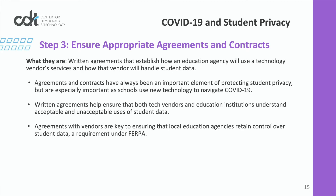The third step is to ensure that the appropriate agreements and contracts are in place with all vendors that are collecting students' PII. These agreements establish how you will use a vendor's services and how that vendor will handle student data. Agreements and contracts have always been an important element of protecting student privacy. By putting these policies in writing, you can ensure that both technology vendors and education institutions understand acceptable and unacceptable management and use of student data. Agreements with vendors also help ensure that you retain control over student data, which is a requirement under FERPA when exercising the school official exception.